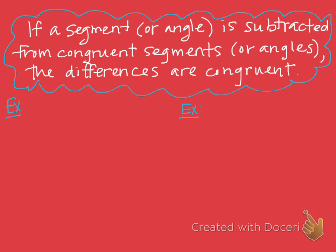The last two theorems were like four theorems condensed into two — they both dealt with addition, adding segments or angles together that were congruent. The next two theorems are going to be about subtraction. We're now looking at the differences of segment lengths and angle measures. The theorem states: if a segment or angle is subtracted from congruent segments or angles, the differences are congruent.